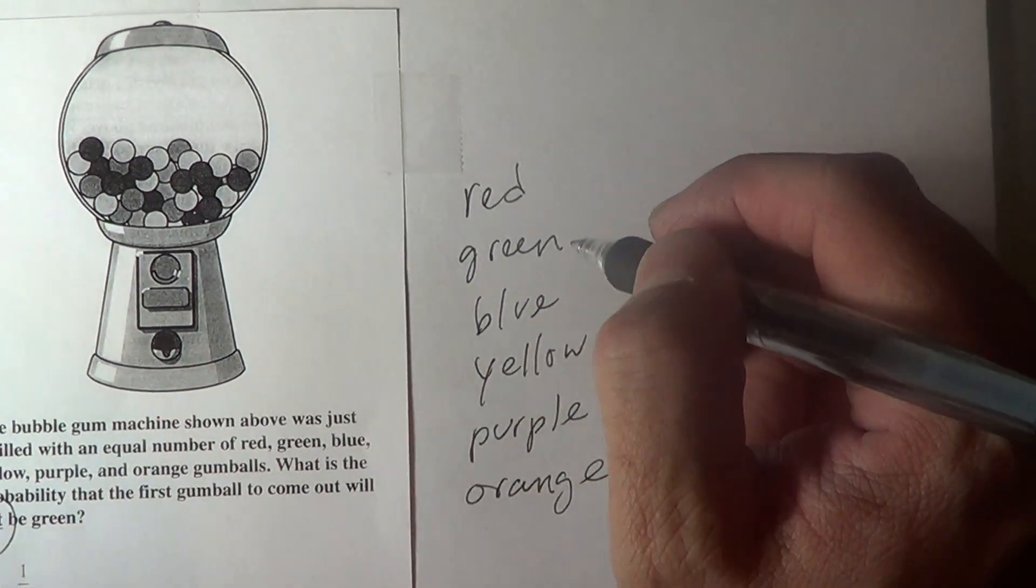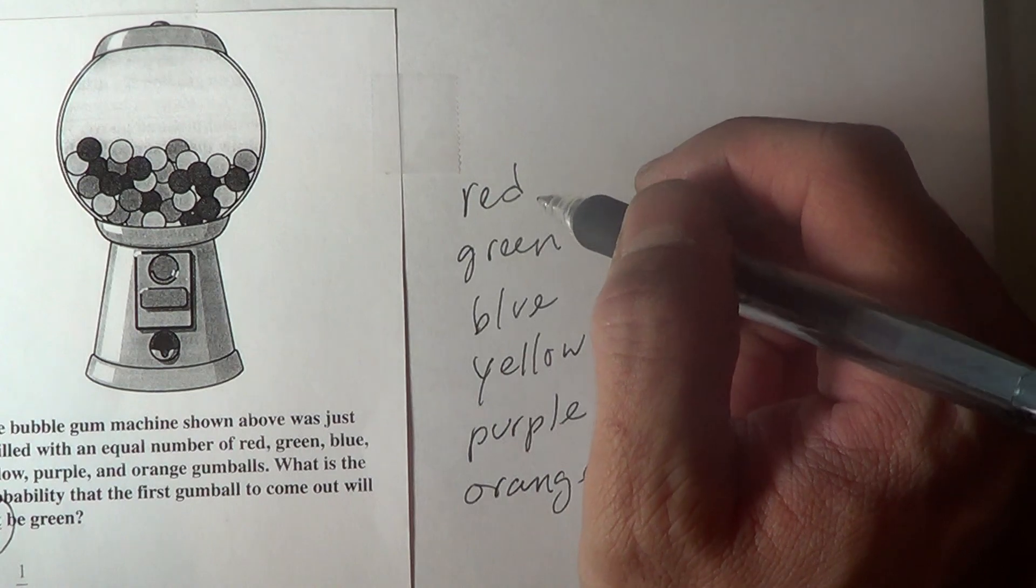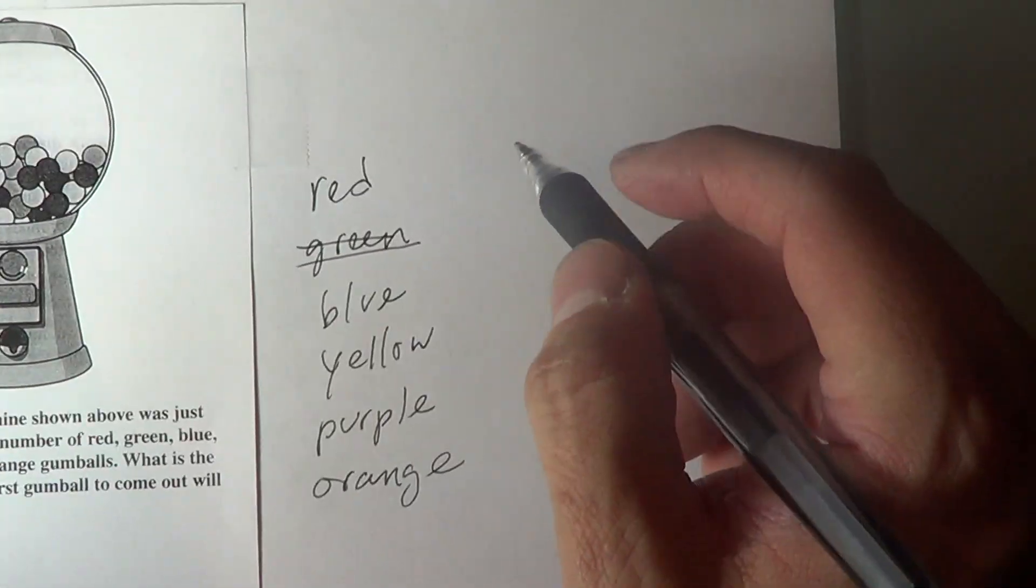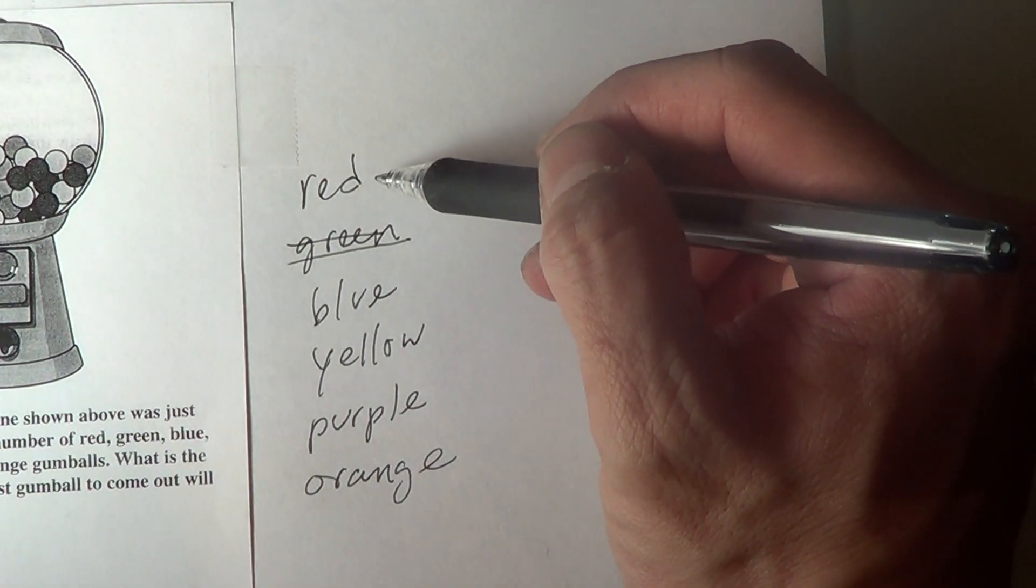Okay, so what is the probability that we will not pick a green gumball? Okay, so not green. But first, let's count how many different types of gumballs are.